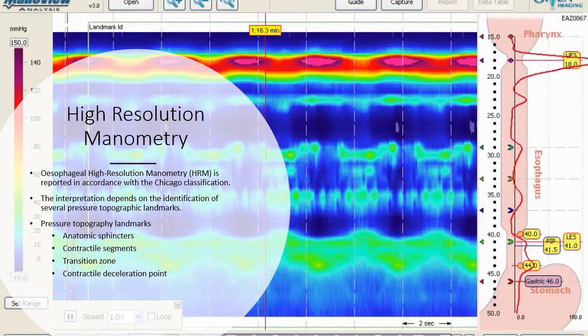These landmarks include anatomic sphincters, contractile segments, transition zone, and the contractile deceleration point.